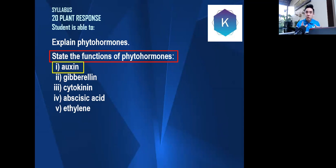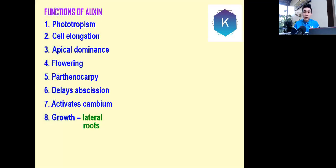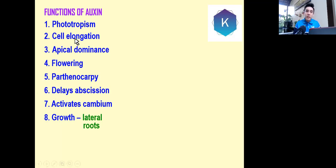I'll just teach you how to tackle auxin, and you can use the same method and apply it to the rest. These are the functions of auxin — semua ini merupakan fungsi-fungsi auxin. You have to memorize eight functions: phototropism, cell elongation, apical dominance (in Malay we call it predominan apex), flowering, parthenocarpy, delay abscission, activate cambium, and growth of lateral roots.